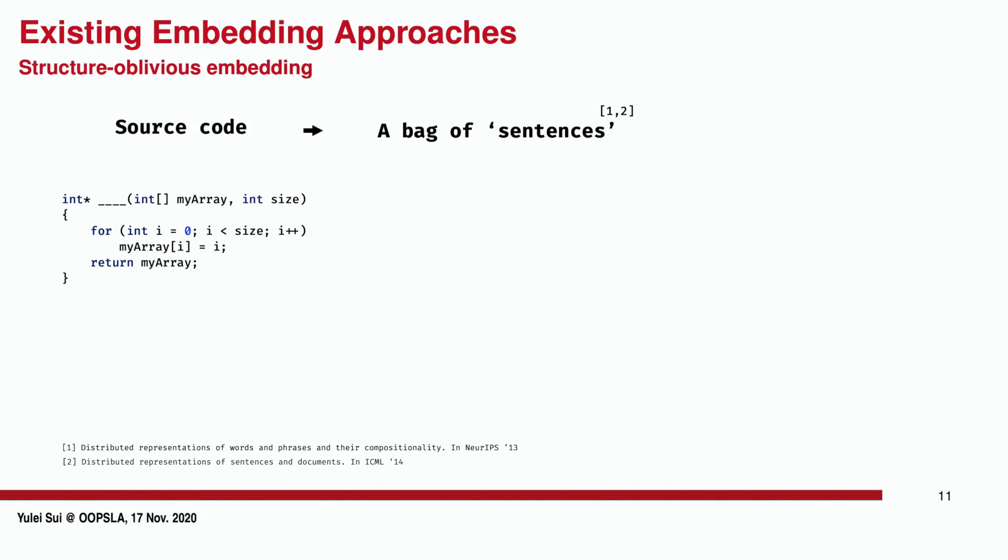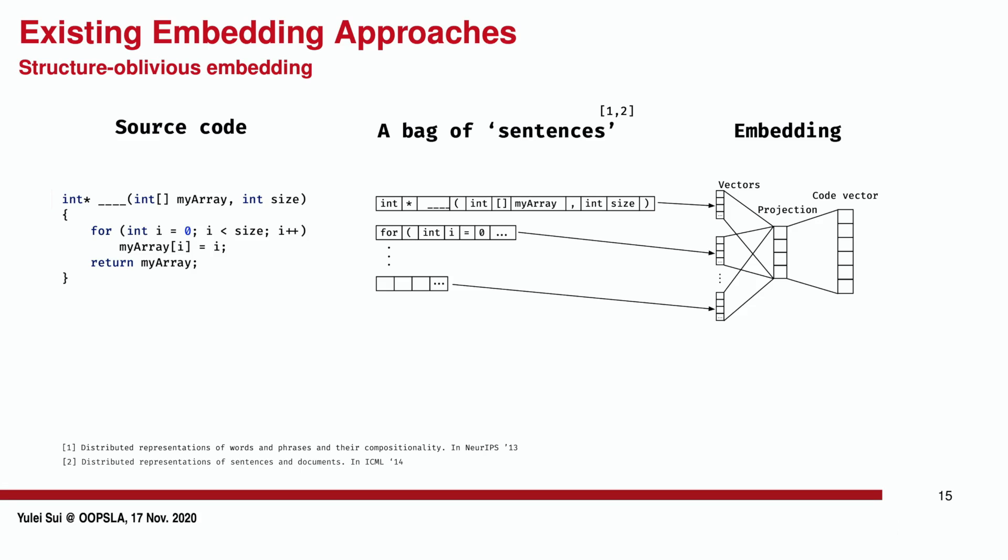The most intuitive way, actually inspired by word embedding in the NLP community, is to treat source code as a bag of textual sentences, so that a code vector can be built by concatenating the vectors of each token in a sentence. Word embedding captures the relationship of a token with its co-occurrence tokens in a sentence.